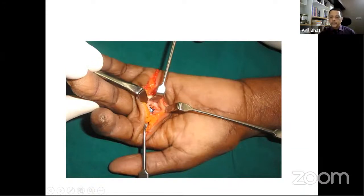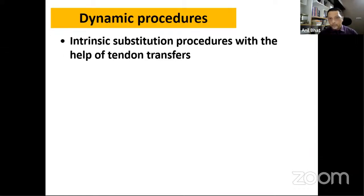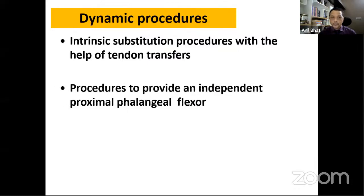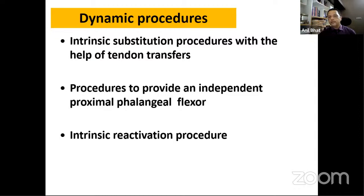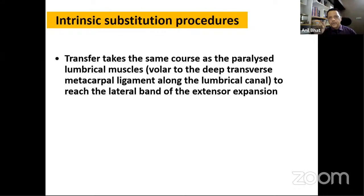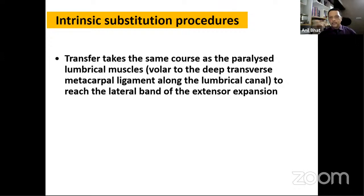Dynamic procedures include intrinsic substitution by tendon transfer, procedures to provide an independent PIP flexor, and intrinsic reactivation using tendon grafts placed along the course of the paralyzed lumbricals. The fundamental principle is that any transferred tendon must follow the same course as the paralyzed lumbrical: deep to the deep transverse metacarpal ligament, through the lumbrical canal, and inserting into the lateral band of the extensor expansion — producing MCP flexion and IP extension.